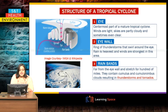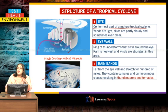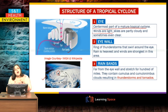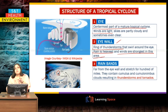A tropical cyclone has three main structural parts: the eye, the eye wall, and the rain bands. The eye is the centermost part of a mature tropical cyclone — it is a calm area with very light winds. After the eye comes the most dangerous part: the eye wall, which is a ring of thunderstorms circling the eye, containing maximum cloud cover and the strongest winds of the entire cyclone.